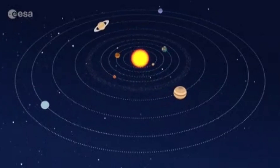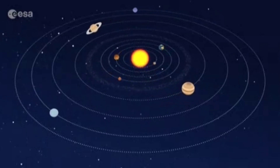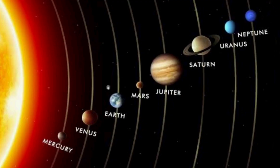And now we all know that there are eight planets in our solar system. They are Mercury, Venus, Earth, Mars, Jupiter, Saturn, Uranus, and Neptune.